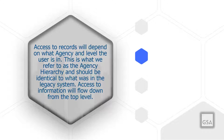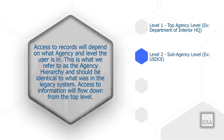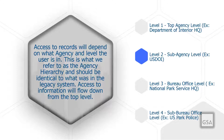Access to records will depend on what agency and level the user is in—this is what we refer to as the agency hierarchy. Access to information will flow down from the top level. Level 1 is the top agency level, for example the Department of Interior's Headquarters. Level 2 would be sub agency level, for example US DOI. Level 3 would be bureau office level, for example National Park Service HQ. Level 4 would be sub bureau office level, for example US Park Police.